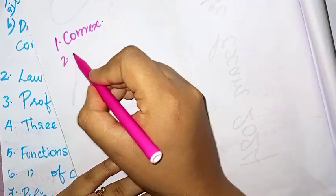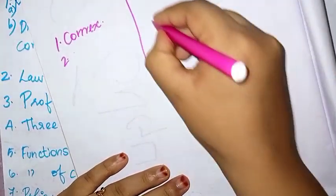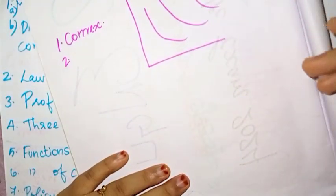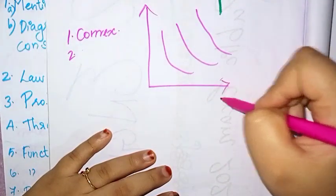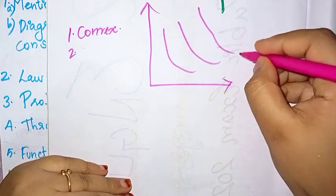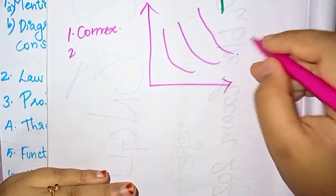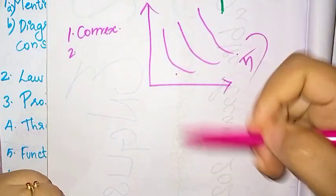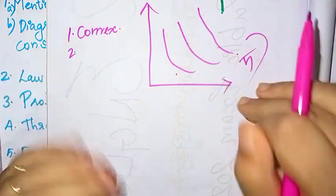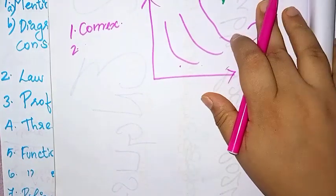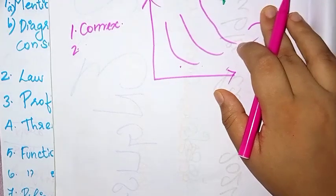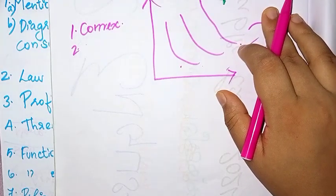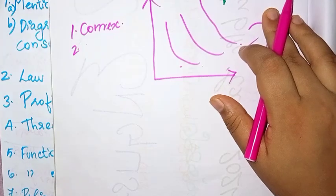Properties: indifference curves never intersect each other; they are convex in shape. High indifference curve gives higher satisfaction and low indifference curve gives lower satisfaction. There are about 5 points and 5 properties and features of indifference curves that I would like to cover in this video.